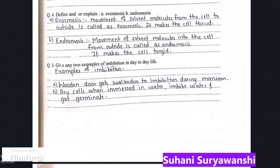Next: define exosmosis and endosmosis. Exosmosis is the movement of solvent molecules from the cell to outside, and it makes the cell flaccid. Endosmosis is the movement of solvent molecules into the cell from outside, and it makes the cell turgid.